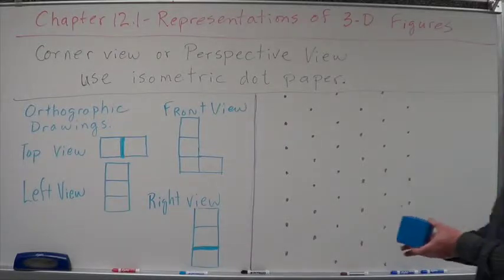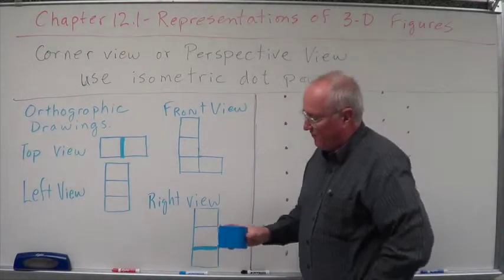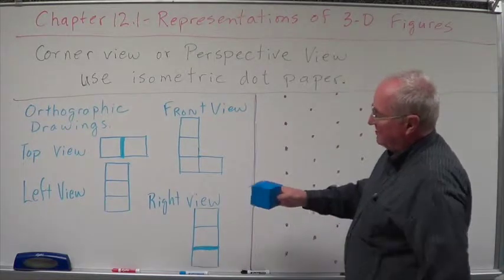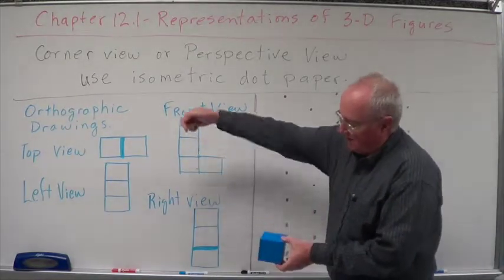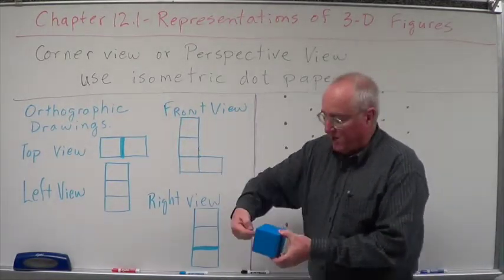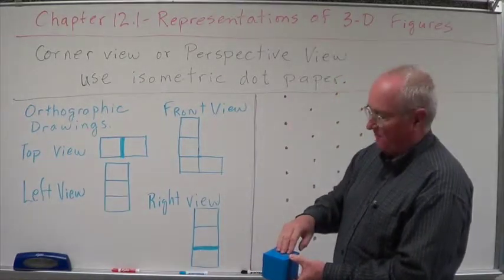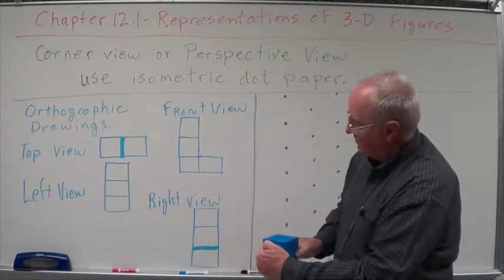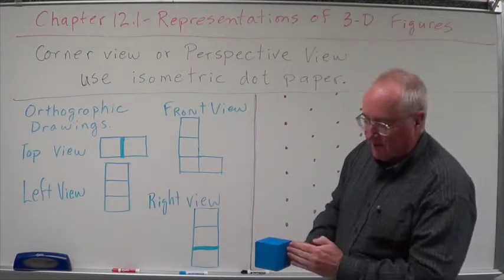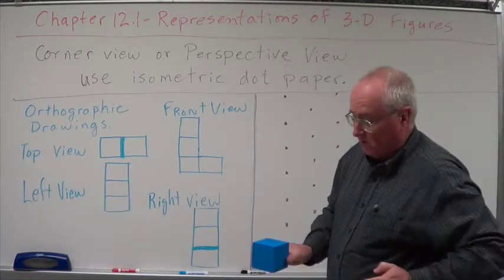So if we're looking at a cube, and if we have it in an isometric dot paper, it's sort of like this, and the left side is going to be from over here. So it's back sort of behind us. Top view is going to be straight down. Front is going to come this way, and the right is going to come from here.